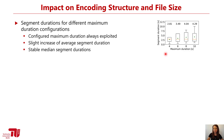Looking at how different maximum duration settings on the x-axis impact the resulting segment durations on the y-axis: we can see that in any case the maximum segment duration is exploited. For example, with a maximum segment duration of 10 seconds, we also observe segments of that duration. Furthermore, the average segment duration shows a slight increase as the maximum segment duration increases, shown as the green triangles, while the median segment durations, denoted as orange lines, remain relatively stable across all configurations.